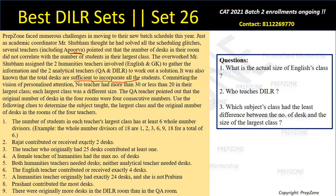Hint two: Rajat contributed or received exactly two desks. So in Rajat's case, the number of desks equals the number of students in the largest class size plus or minus two.